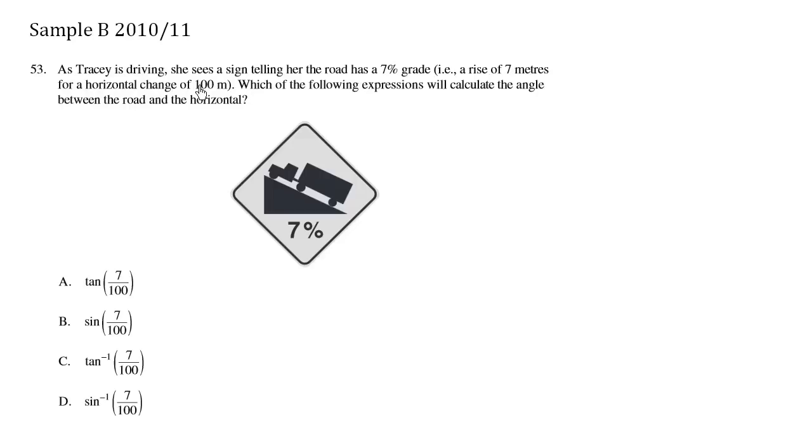As Tracy is driving, she sees a sign telling her the road has a 7% grade. Here's a sign. It means that we rise 7 meters.